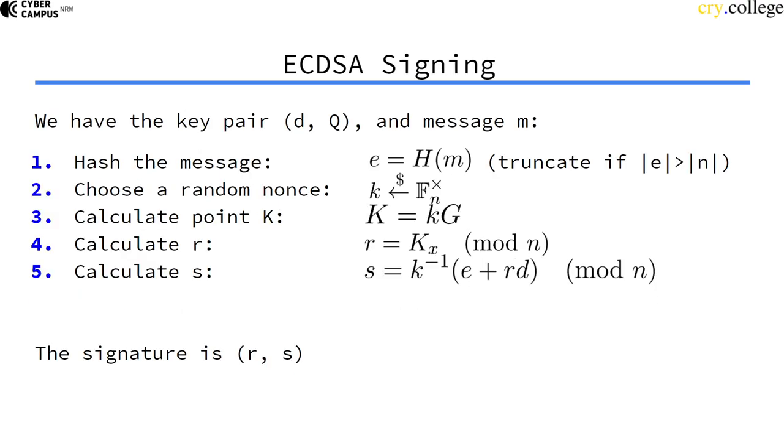So I want to mention this random nonce here. This is a random value—every signature needs a new random value. This is the notation for drawn at random from this group here.